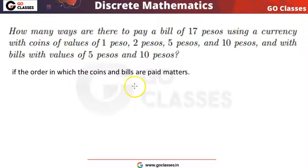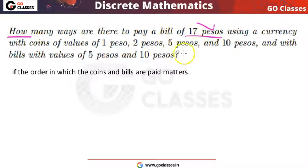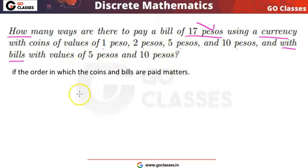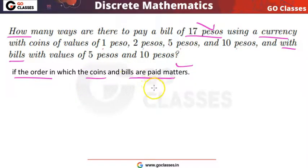Hi everyone, welcome to Go Classes. Let's see this question: how many ways are there to pay a bill of 17 pesos using currency with coins of value 1, 2, 5, and 10 pesos, and with bills of 5 pesos and 10 pesos? The order in which the coins and bills are paid matters.